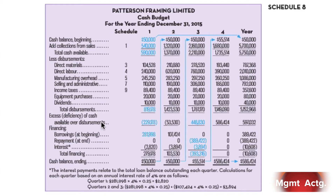We total the disbursements — section one is total cash available, section two is total disbursements. Section three is either excess or deficiency of cash. In the first quarter we have a deficiency of cash — and that's the beauty of budgeting: we get to see that before we actually run short. Section four is our financing. There's a desired ending balance of cash; in this case the company wants to end each quarter with at least fifty thousand dollars in cash.